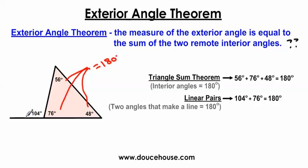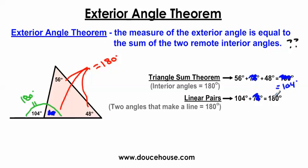I also have a linear pair. If I look at the exterior angle and the adjacent interior angle, we have a linear pair — these two angles combine to make a line and they have to equal 180 degrees. Do you see that the 76 degrees is used by the linear pair and also by the triangle sum theorem? What happens if I eliminate the 76 degrees? If I remove the 76 degrees from the triangle sum theorem and add the remaining angles, 56 plus 48, that equals 104 degrees. If I do the same thing in the linear pair and remove the 76 degrees, I again end up with 104 degrees. So since both the triangle sum theorem and the linear pair are dependent upon this shared angle, if I eliminate that angle, the exterior angle is always going to equal the two remote interior angles.